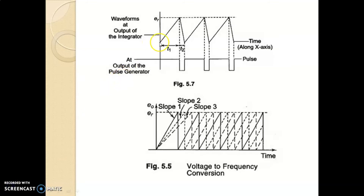For a better understanding of the operation of the integrating type of digital voltmeter, as we already discussed, the output of the integrator goes to the comparator. The output of the integrator is in ramp form — this is a ramp signal. This ramp signal goes to the comparator, which has two inputs: the first is the output from the integrator and the second is a reference signal.